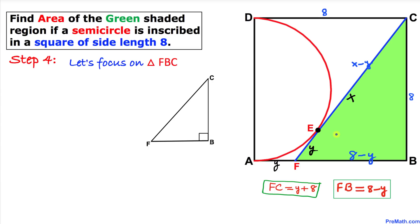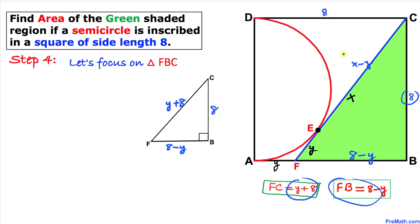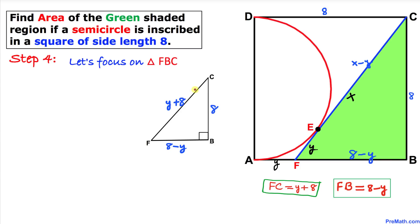Now let's focus on the green shaded triangle FBC. We know FC equals y plus 8, FB equals 8 minus y, and BC equals 8. Since ABCD is a square, angle B is 90 degrees, making this a right triangle. Therefore, we will use the Pythagorean theorem.